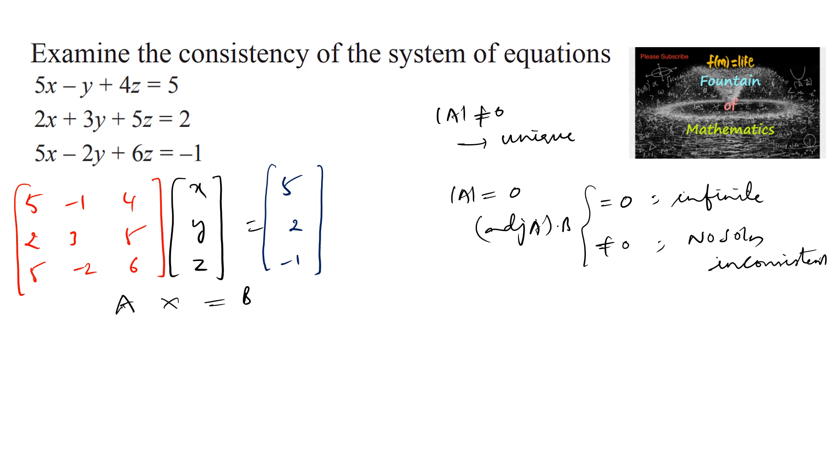So let us find the determinant of A. Determinant of A is equal to the determinant of 5, -1, 4; 2, 3, 5; 5, -2, 6.